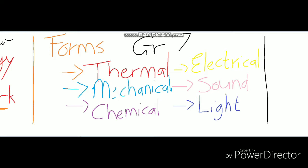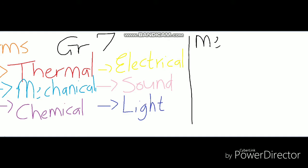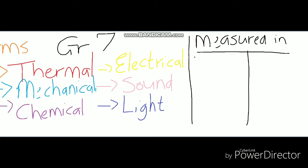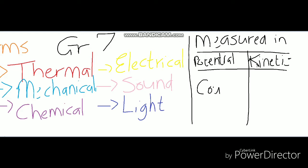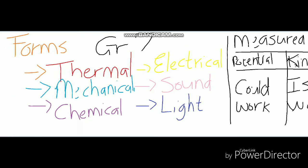Now, potential and kinetic energy are not forms of energy — this is important. All of the forms of energy could either be potential or kinetic. Potential energy is when something could do work; it has the potential to do something. Kinetic energy is when something is actively doing work or moving. The more potential energy something has, the less kinetic, and vice versa — they interchange.